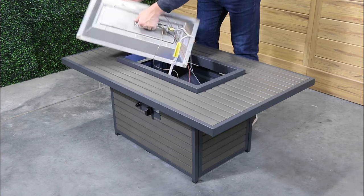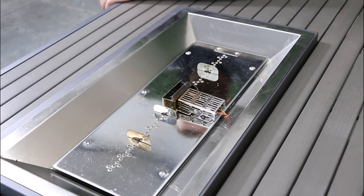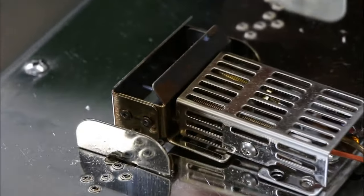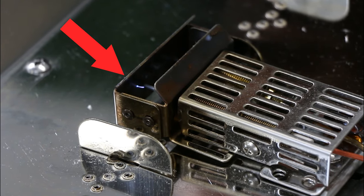Put burner back in. Check electrode in burner for visible spark. There should be a 1/8th to a 3/16th inch gap from the end of the electrode to the wind guard.